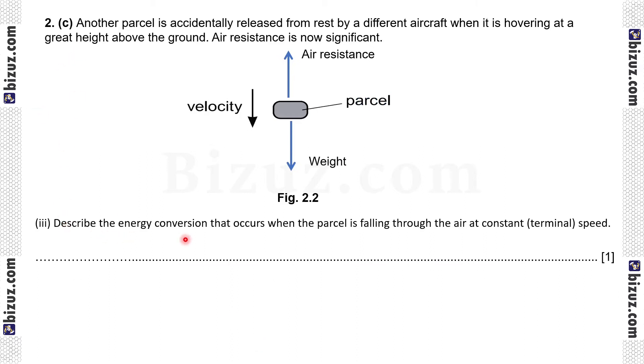2c3, describe the energy conversion that occurs when the parcel is falling through the air at constant speed. Gravitational potential energy to thermal or internal energy, because speed constant means kinetic energy constant. That's why decrease in gravitational potential energy is converted to thermal or internal energy.